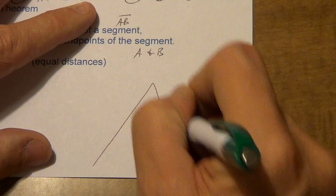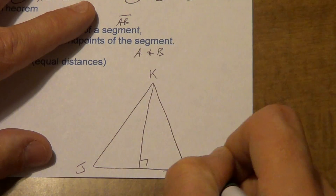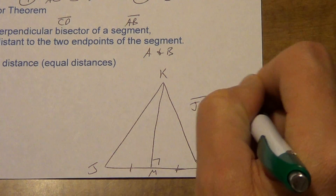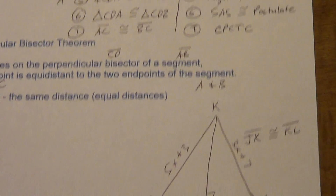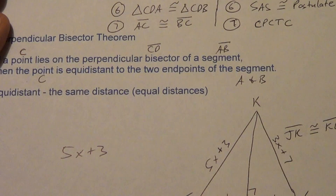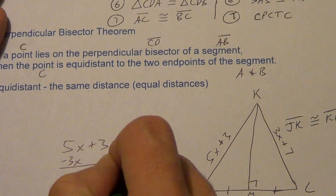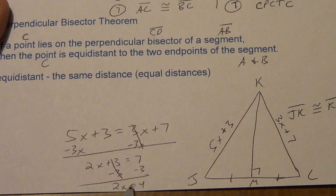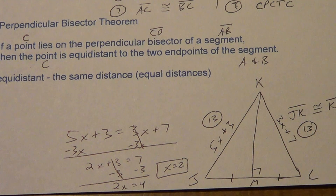Here's an example: if a point is on the perpendicular bisector — say J, K, L, M with the bisector marked — then JK is congruent to KL. If JK = 5x + 3 and KL = 3x + 7, your algebra says they're congruent, so 5x + 3 = 3x + 7. Subtract 3x: 2x + 3 = 7. Subtract 3: 2x = 4. Divide by 2: x = 2. Check: 5(2) + 3 = 13, and 3(2) + 7 = 13. It makes sense.